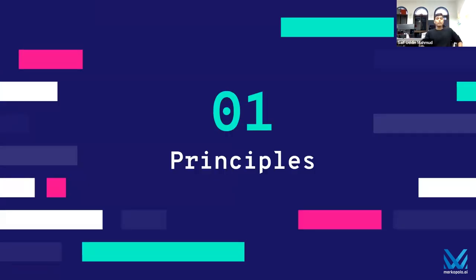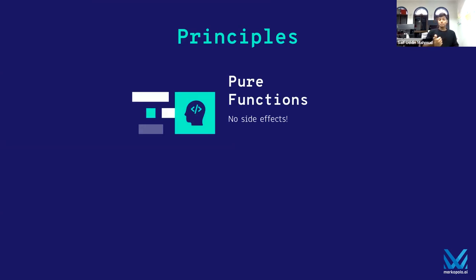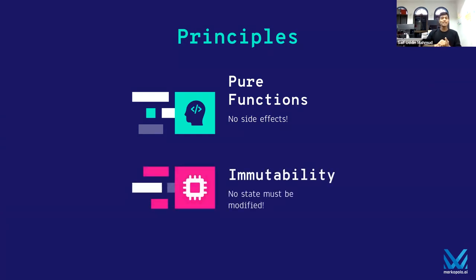Firstly, the principles of functional programming. Forget about all those words I just said and think about these two things. The first principle is that you only write pure functions — basically, you do not have any side effects from a function. The second thing, which is related, is immutability: no state must be modified. This is where people get super confused, since all of our programs are kind of state machines.